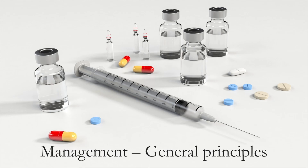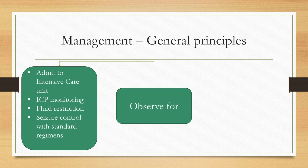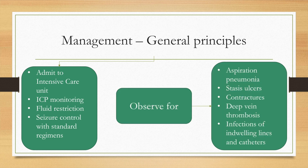Let us begin with a brief discussion of the general principles of management for meningitis and encephalitis. The patient must be admitted to an intensive care unit with intracranial pressure monitoring. Fluid restriction and seizure control are required. We must observe the patient for aspiration pneumonia, stasis ulcers, contractures, deep vein thrombosis, and infections of indwelling lines and catheters.